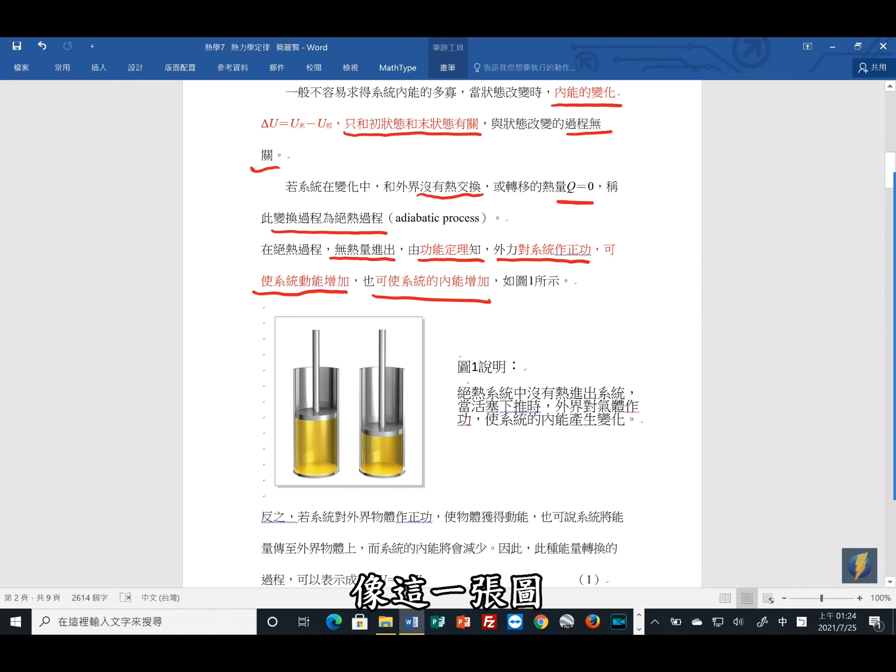因此系统的内能也会增加。像这一张图,图一,可以告诉我们的,这就是有所谓的系统,这边有活塞。所以绝热系统的过程中,没有热进出系统。那当活塞往下推的时候,外界对气体做功,所以系统的内能会产生变化。